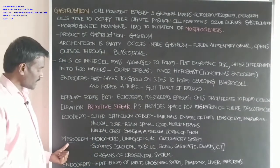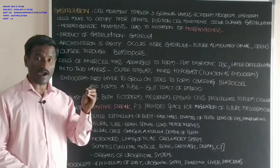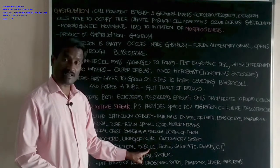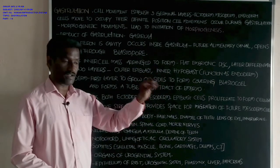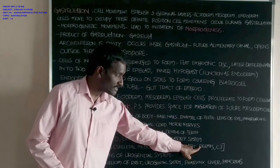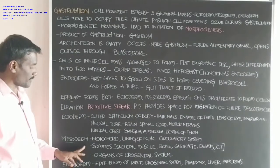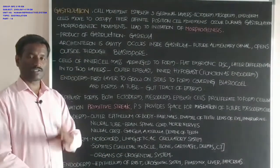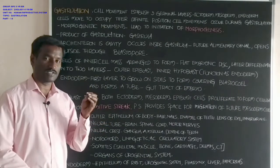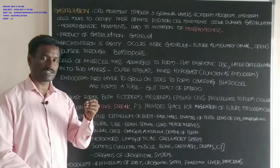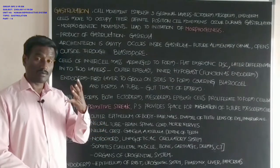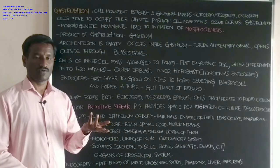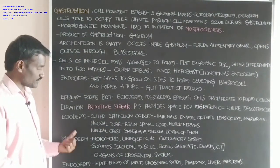Somites are also produced from mesoderm, appearing as cuboidal blocks. Somites give rise to skeletal muscles, bone, cartilage, dermis, and connective tissue. Organs of the urogenital system — including parts of the urinary and reproductive systems such as the ureter, ovaries, and oviduct — are also produced from mesoderm.